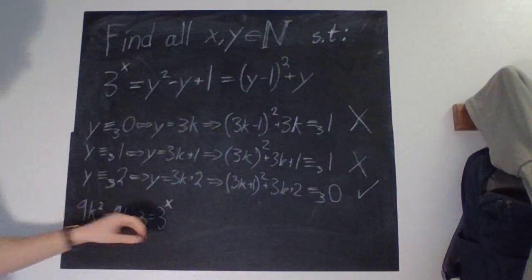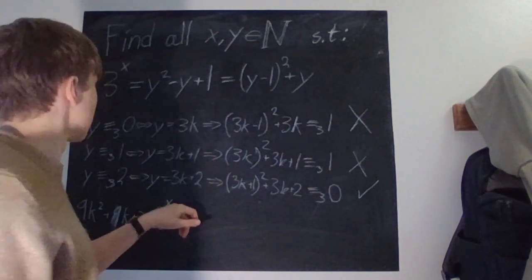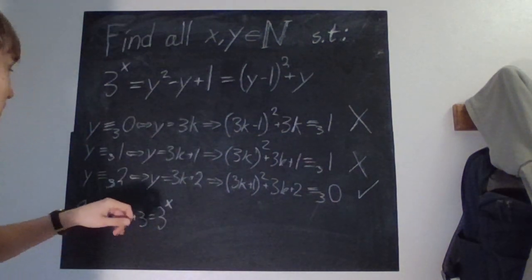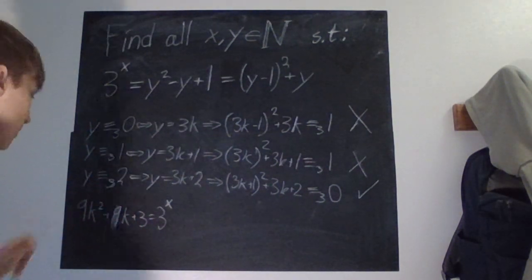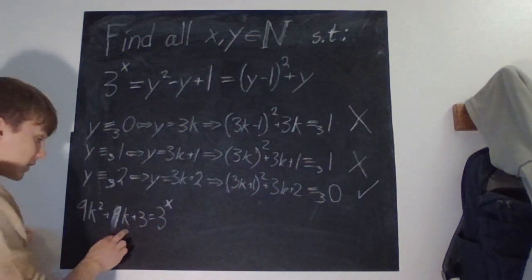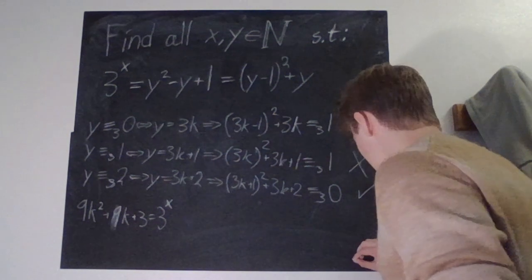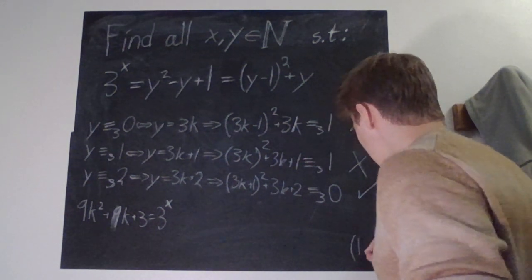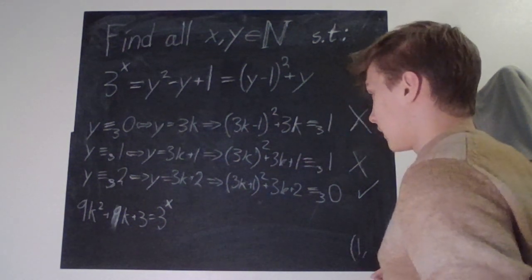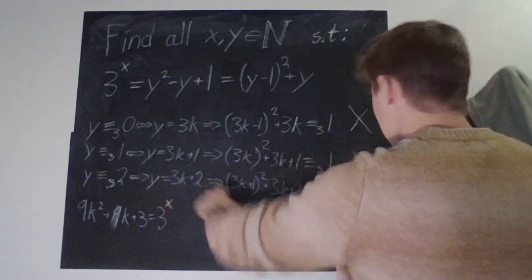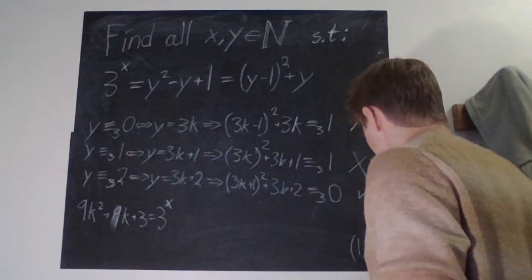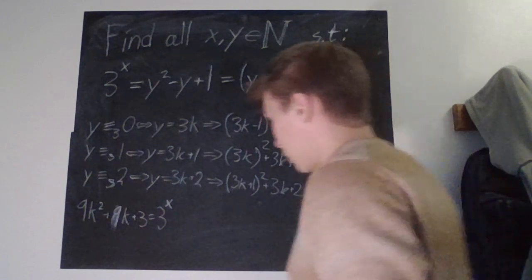So obviously we have the case where x is equal to 1, sorry, this is equal to 1, then k is just equal to 0. So that's already a solution we have. We can write that over here. We have that x is 1, and y, k is 0, meaning that y is 2. So that one works.